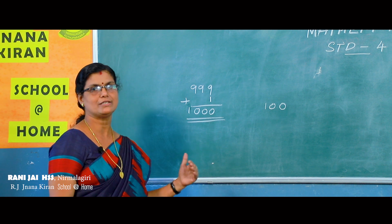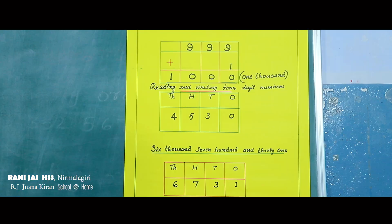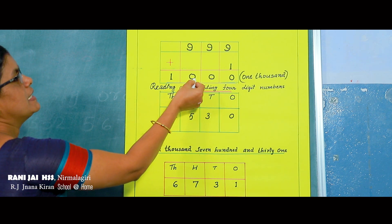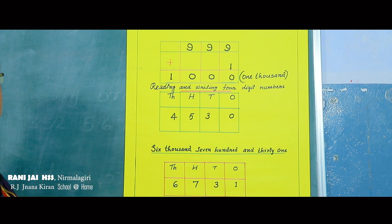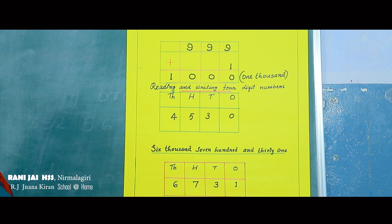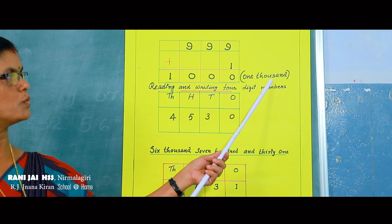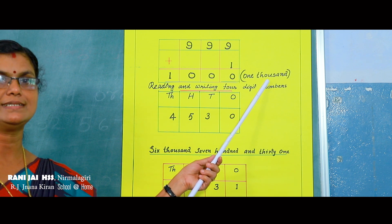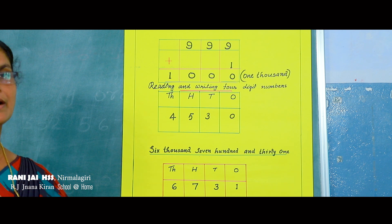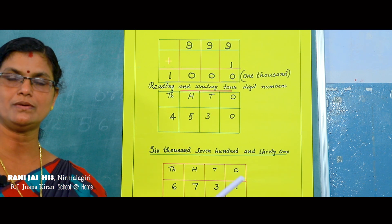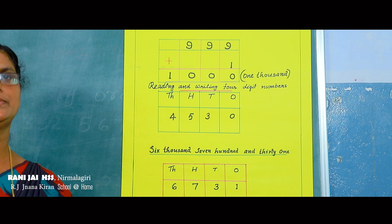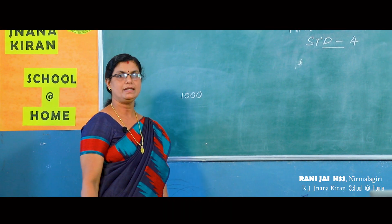Which is the number in the thousands place? One. So let's read this number as one thousand. Look at the chart — you can see ones place, tens place, hundreds place, and thousands place. How many thousands are there? There is only one, so you can read this number as one thousand. This word 'thousand' is new for you, so all of you write and study the spelling: thousand.